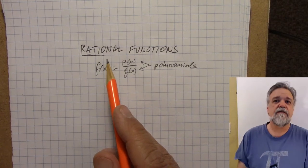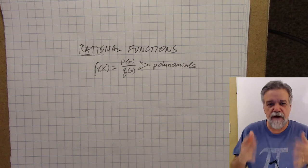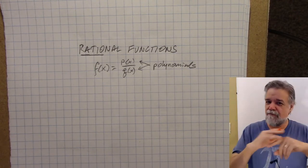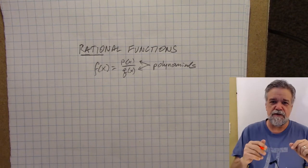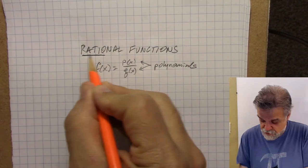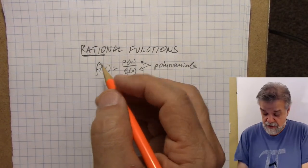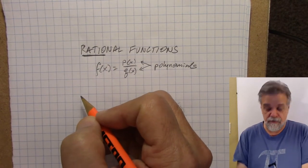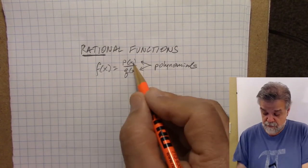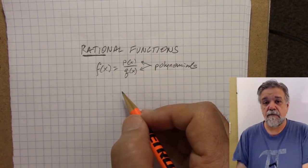You may be thinking, oh thank God, finally a rational function — a function that makes rational sense. Well, yes, it makes sense, but that's not why we call it a rational function. We call it a rational function because it is a ratio — just a fancy word for fraction. And it's a ratio of two polynomial functions.